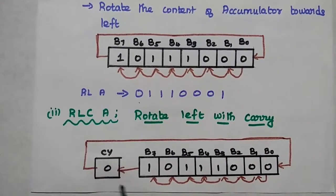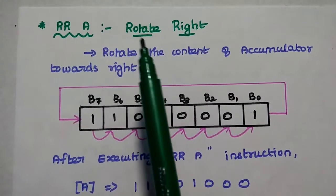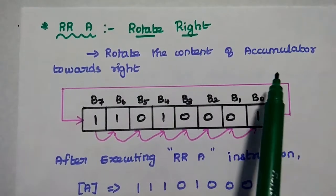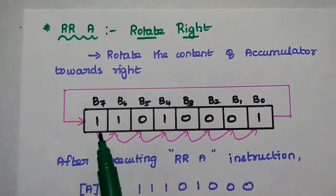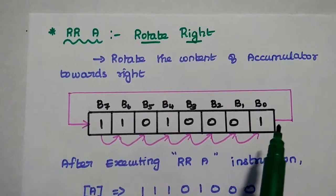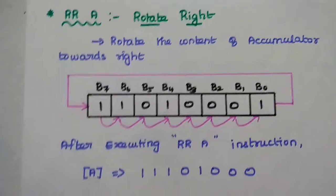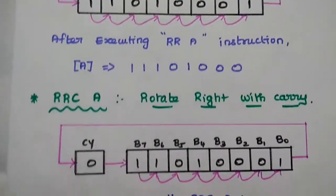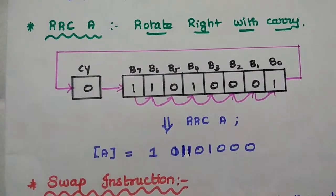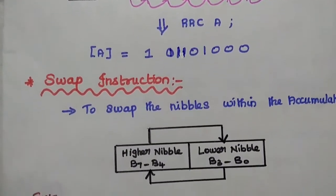The next instruction is RR A, which rotates the content of the accumulator towards the right — each bit moves right and the 0th bit becomes the 7th bit. The difference between RR and RRC is that RRC (rotate right with carry) includes the carry bit in the rotation process.